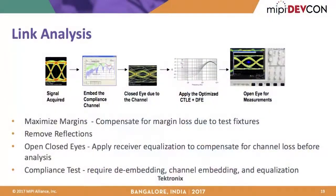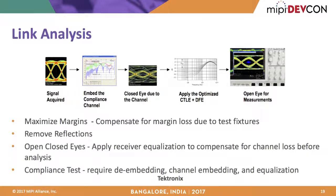The current D-PHY version 2.1 goes up to 4.5 Gbps, and current C-PHY version 1.2 goes up to about 3 gigasymbols per second. As future specs could more than double the current data rates, it will be inevitable to incorporate link analysis capability in test systems — embedding a compliance channel for TX testing, de-embedding traces or fixtures for calibration, and mimicking receiver CTLE or DFE equalizers.